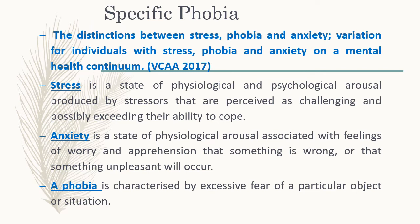You first need to be able to tell the difference between stress, anxiety and phobias. Stress is a state of physiological and psychological arousal produced by stressors, and you need to make sure that you write that it's perceived as challenging and possibly exceeding your ability to cope. Anxiety is a state of physiological arousal associated with feelings of worry and apprehension that something is wrong or something unpleasant will occur. A phobia is excessive fear of a particular object or situation that interferes with daily functioning.